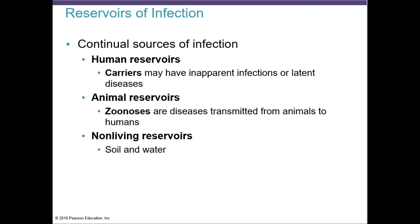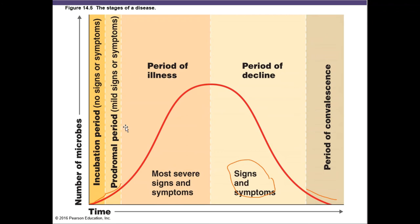It's important to note that during any one of these periods or stages of the disease, you can be infectious. Some diseases, even in the period of convalescence, can still be transmitted if the microbe becomes latent in the body. For example, even when not showing symptoms, you can still infect somebody with herpes virus through direct contact.